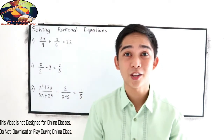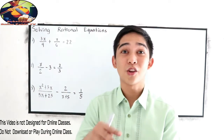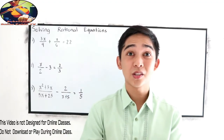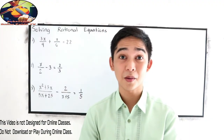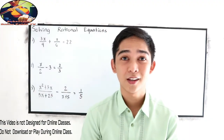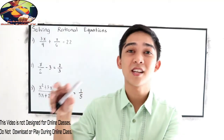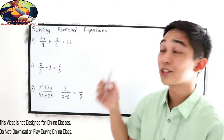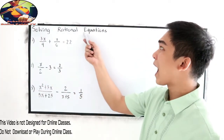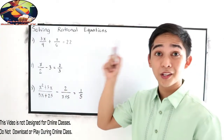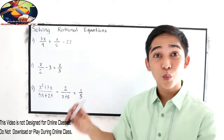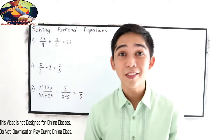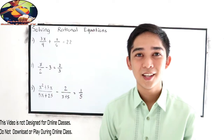Solving rational equations. We are done with operations on rational expressions and simplifying rational expressions. We're going to use the process from our previous topics. In solving rational equations, we're dealing with the equal sign and we're going to find the values for our unknown variables.